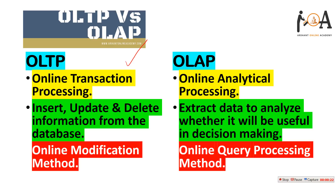The abbreviation of OLTP is Online Transaction Processing, and the abbreviation of OLAP is Online Analytical Processing. In OLTP you can insert, update, and delete information from the database, so basically it is an online modification method — you can modify data in it.